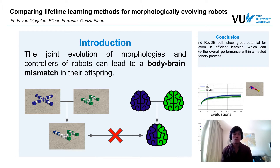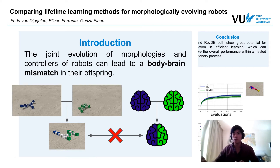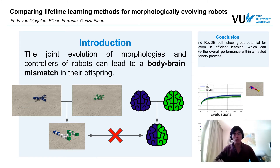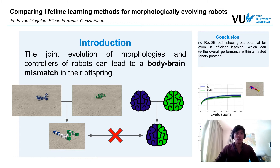Let me start by walking you through the paper. A problem that arises in evolutionary robotics is the body-brain mismatch, in which the joint evolution of morphologies and controllers can lead to a bad-behaving offspring. This is the case when the requirements for optimal behavior in, for example, a rowing robot compared to a stepping robot are so different that when we combine both bodies into a new offspring, this new body actually requires something totally different than the behavior seen in the parents.